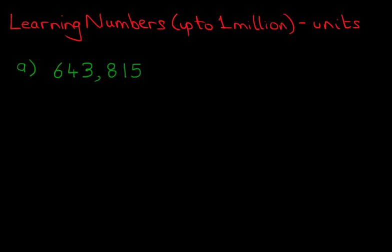Now the question is — and they'll be different, we're not going to go through this in order — how many thousands are there in this number? How many thousands are there? Which one is the thousands? It's the one to the left of the comma. We're just going to label this one for the time being. That is the thousands.